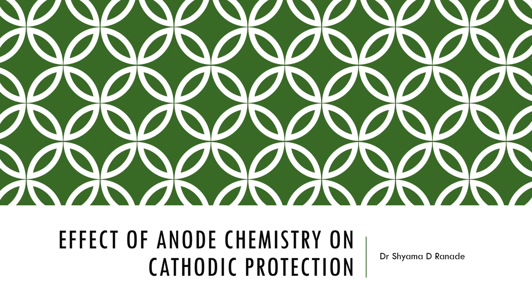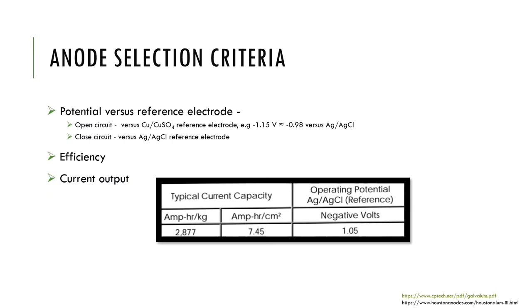Hello everyone, welcome back to the new video. Today I will talk about the effect that anode chemistry may have on its selection and cathodic protection. When an anode is to be selected for use in a CP system, the usual parameters which are looked at are the potential of the anode versus a reference electrode, its efficiency, and its current output.